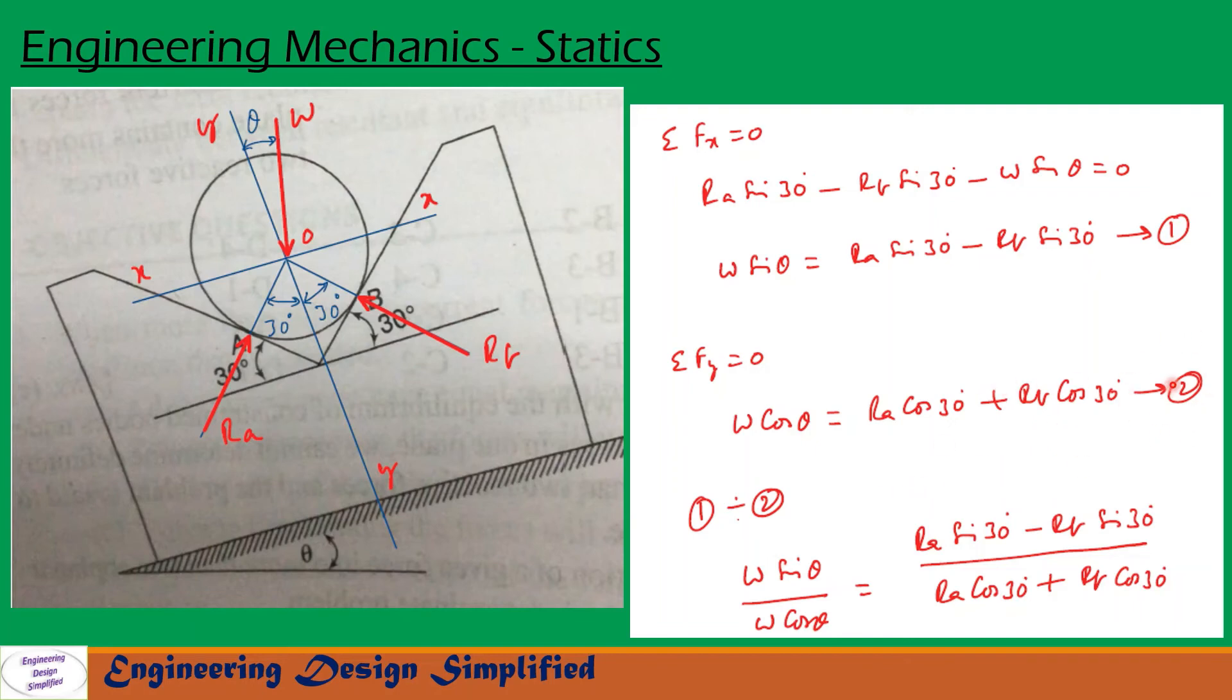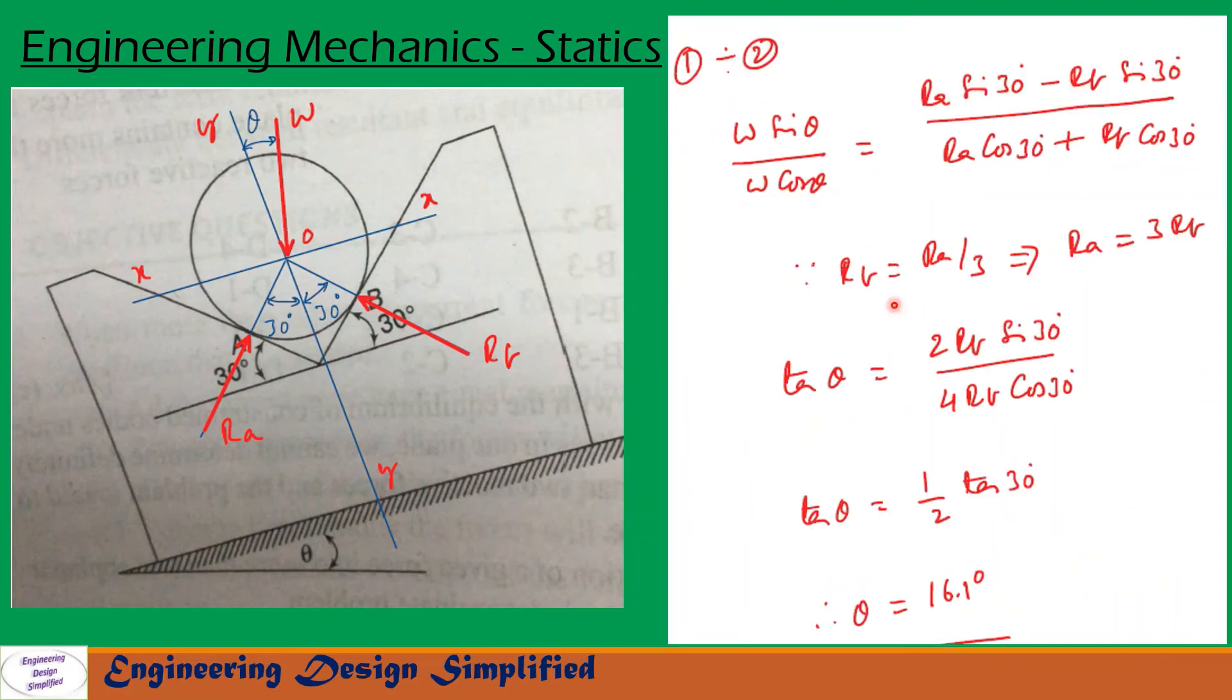Now, let us divide equation 1 by equation 2. We get W sin theta by W cos theta equal to Ra sin 30 minus Rb sin 30 by Ra cos 30 plus Rb cos 30. Since in the problem, Rb is given as Rb is one third of Ra, that is Rb equal to Ra by 3. Let us rearrange this. Ra equal to 3Rb.